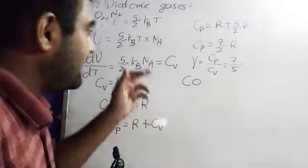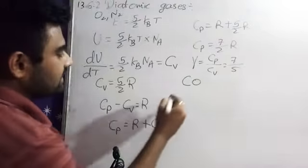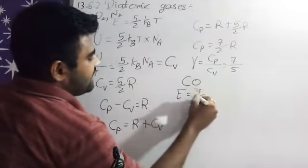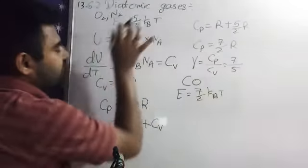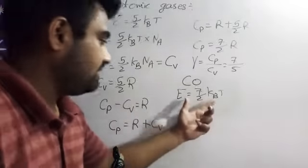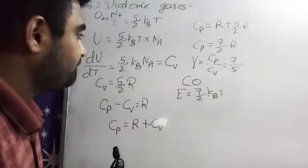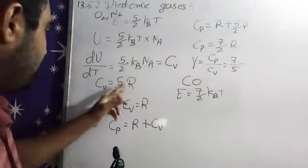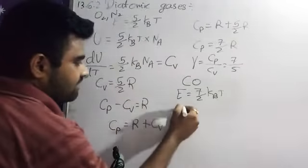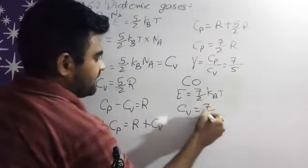So now our energy, total energy will be E is equal to 7 by 2 kBT instead of this equation. So here, now we have Cp, 7 by 2, right? So, direct comes to this formula, we are getting Cv is equal to 7 by 2 into R.